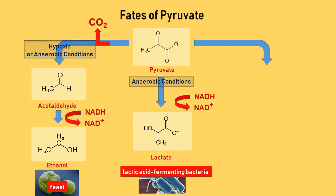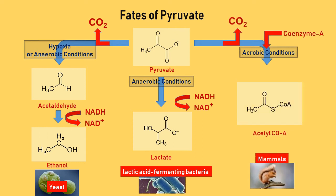Lactate enters the Cori cycle in the absence of mitochondria. It can be converted to acetyl coenzyme A for complete oxidation by entering the citric acid cycle and oxidative phosphorylation. But acetyl coenzyme A can also be used to make fatty acids in cellular states of high energy.